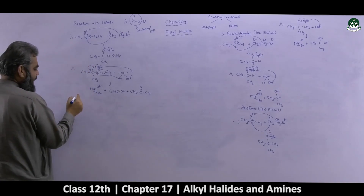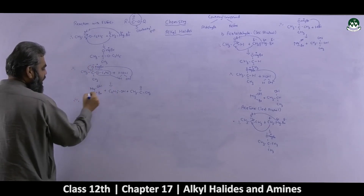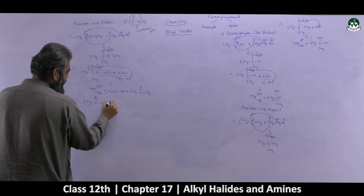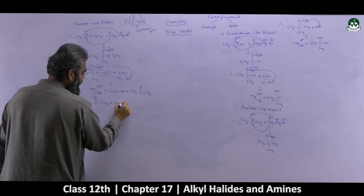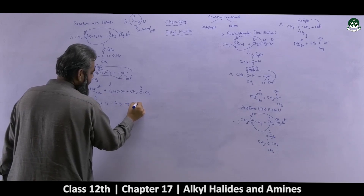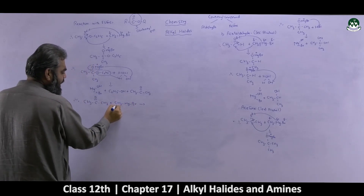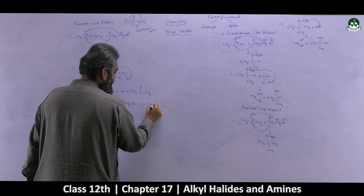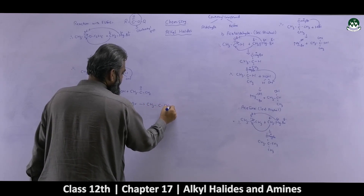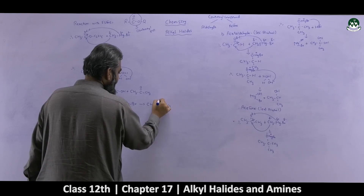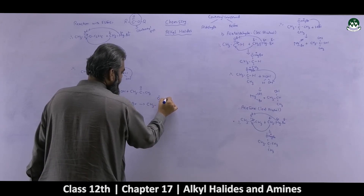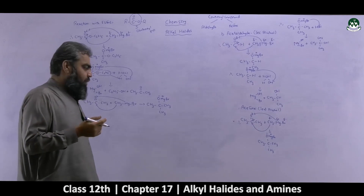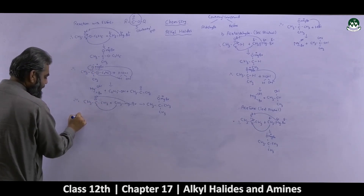The reaction is not yet complete. In step three, we take this ketonic molecule and combine it with another molecule of Grignard's reagent. CH₃ attaches to the carbonyl carbon and MgBr attaches to the oxygen, giving the intermediate (CH₃)₂C(-CH₃)-O⁻-MgBr. In the last step, as we have been doing, hydrolysis of this intermediate is carried out.